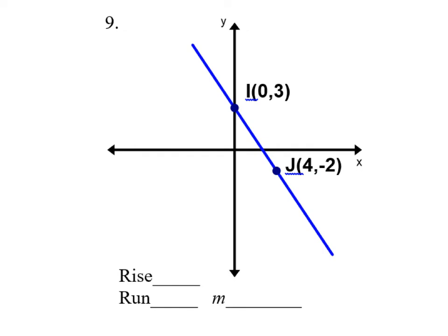Let's look at number nine as well. I'm looking at the y values, because y values are up and down. This one goes from three to negative two, so the distance is three minus negative two, which is the same as three plus two — that's five for the rise. The run uses the x values, going from zero to four: zero minus four gives me negative four. So the slope on this one is five over negative four.